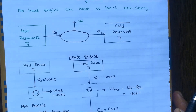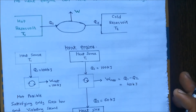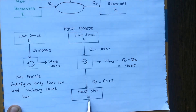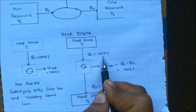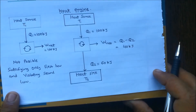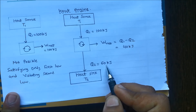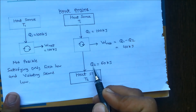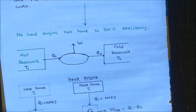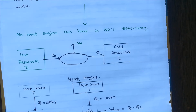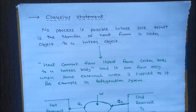Consider a heat engine with two reservoirs: a hot source at temperature T1 and a cold sink at temperature T2. If 100 kilojoules of heat is supplied to the heat engine, according to the second law of thermodynamics some heat must be rejected to the heat sink at temperature T2. For example, if heat rejected Q2 = 60 kilojoules, then work done = heat supplied minus heat rejected = 100 − 60 = 40 kilojoules. Therefore, no heat engine can have 100% efficiency and complete conversion of heat into work is not possible according to the Kelvin-Planck statement.